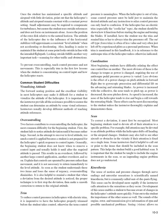Once the student has maintained a specific altitude and airspeed with little deviation, point out that altitude and airspeed remain constant with a constant power setting. Small adjustments may be required to compensate for turbulence, but ensure the student uses outside references and does not focus on instruments alone. Assess the position of the rotor disc relative to the natural horizon. Heading is easier to maintain if the student looks outside in line with the intended flight path, which also fulfills the important task of scanning for other traffic and obstructions.